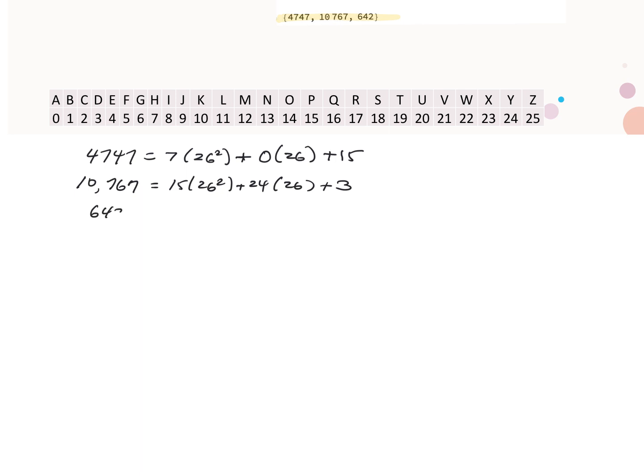Lastly, we'll do the same for 642, and 642 is 0 times 26 squared, plus 24 times 26, plus 18.